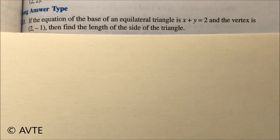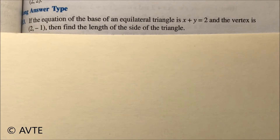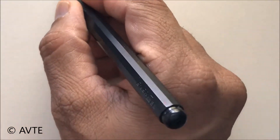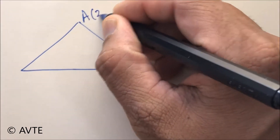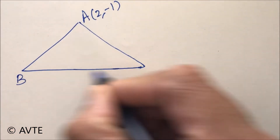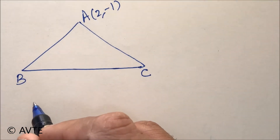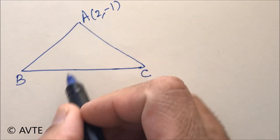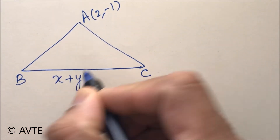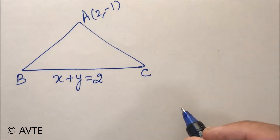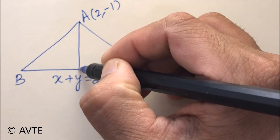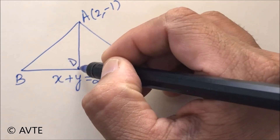Question 13: If the equation of the base of an equilateral triangle is x plus y equals 2, and the vertex is (2, -1), find the length of the side of the triangle. We can make a triangle where A is (2, -1), the vertex, and B and C are the other two vertices. The equation of the base, opposite to the vertex, is x plus y equals 2. We drop a perpendicular from A to the base to find its length.